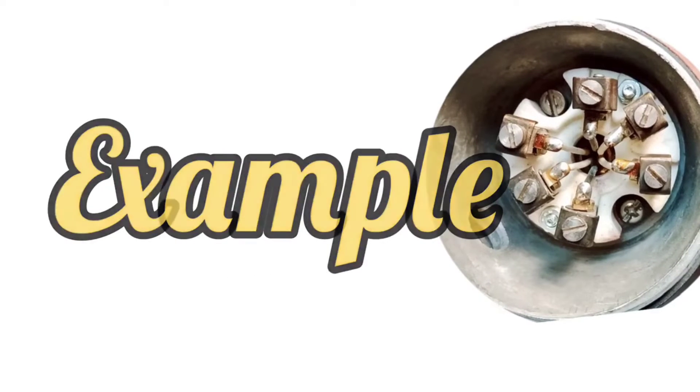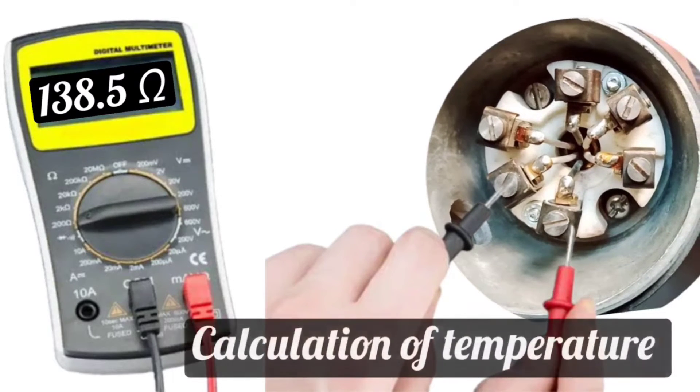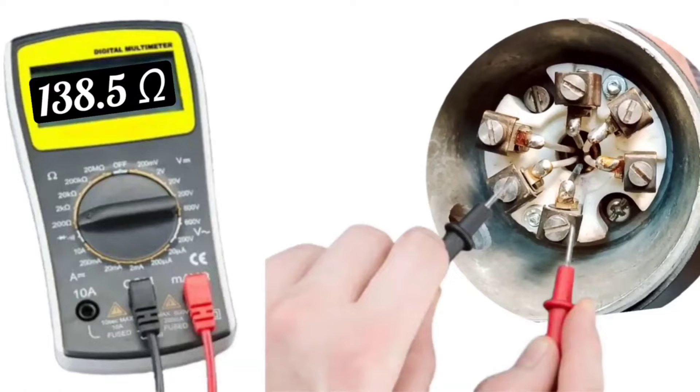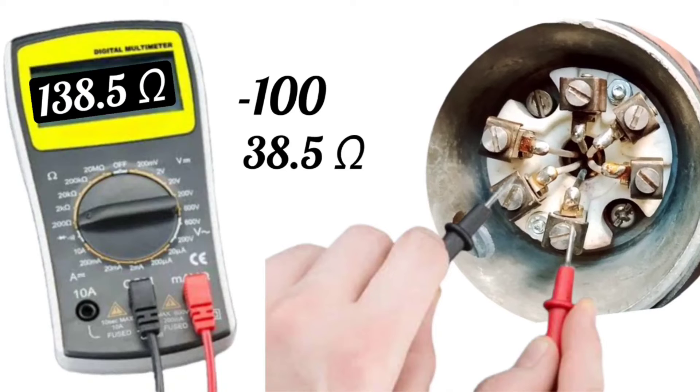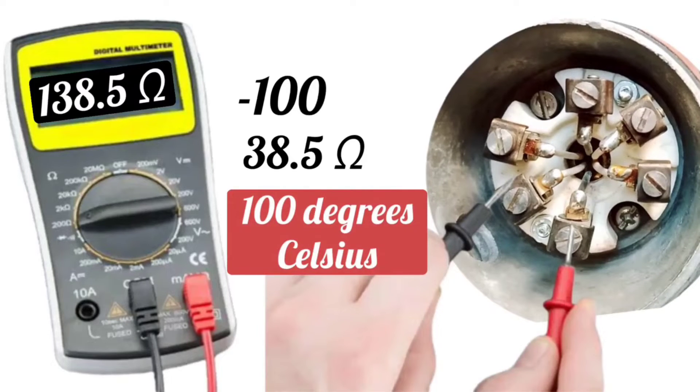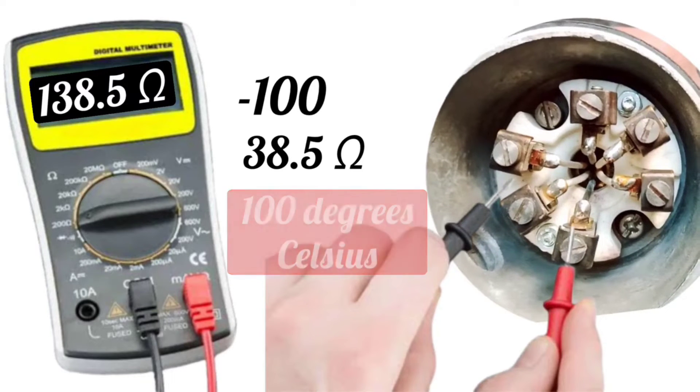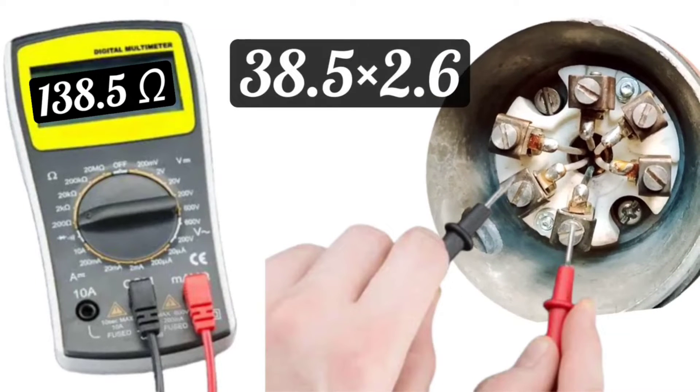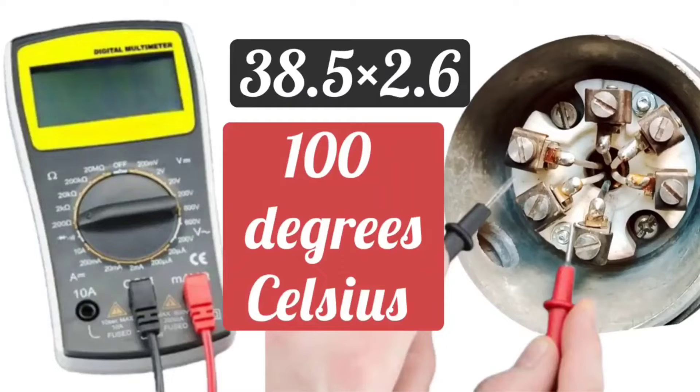Let's understand this with an example. For example, if the resistance of 138.5 ohm RTD is showing, then calculate the temperature. Subtract 100 from 138.5, it will be 38.5. When we divide it by 0.385, it will be 100, which means 100 degrees Celsius temperature will be at that place. If resistance is showing 138.5 ohms, let's solve it with another method. If you multiply 38.5 by 2.6, then it will also be approximately 100 degrees Celsius.